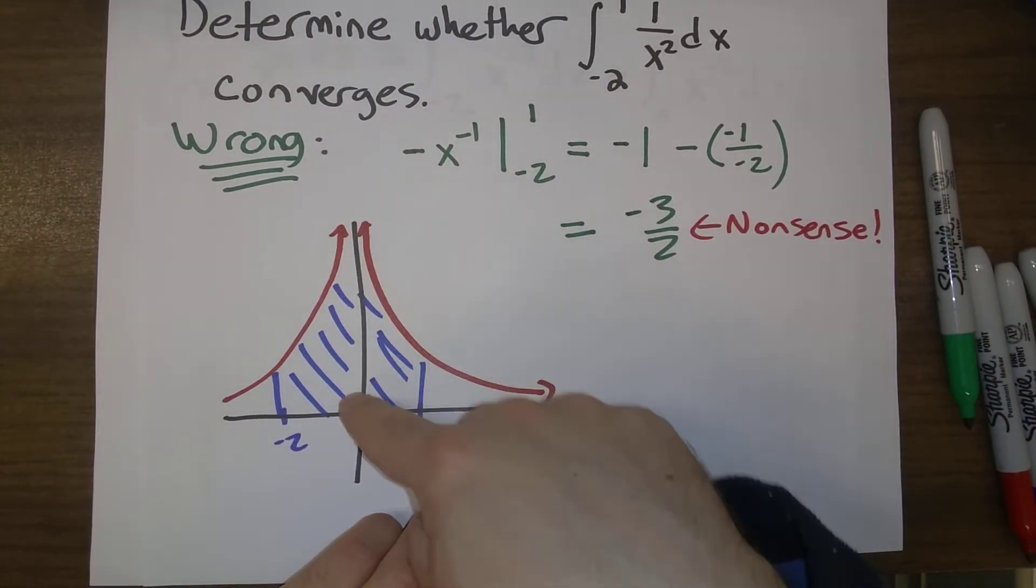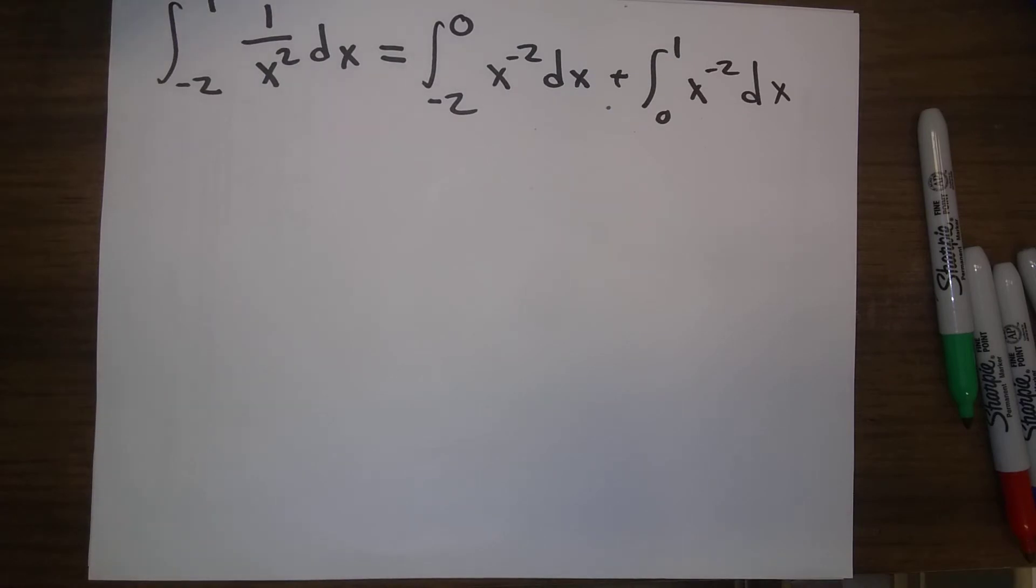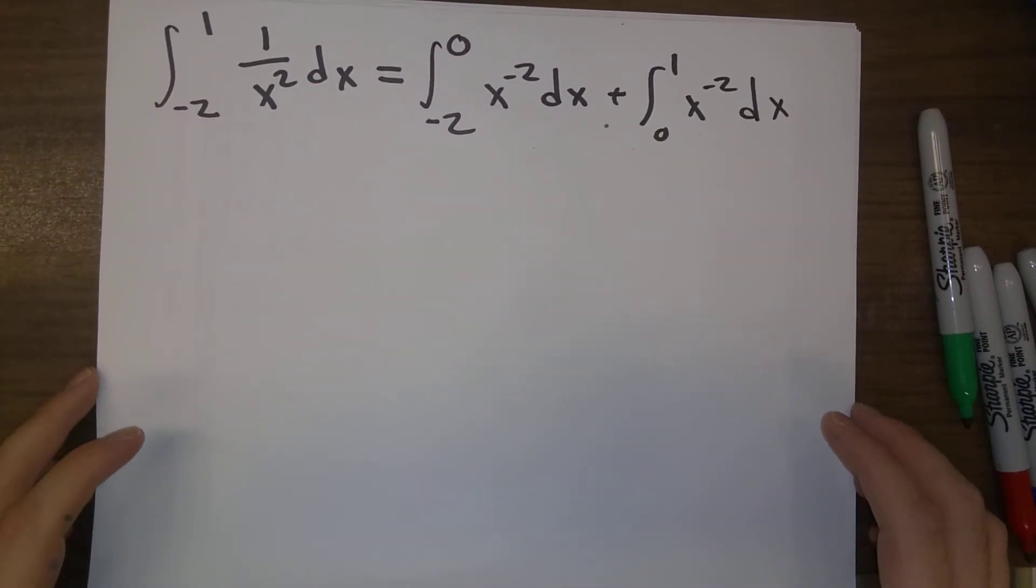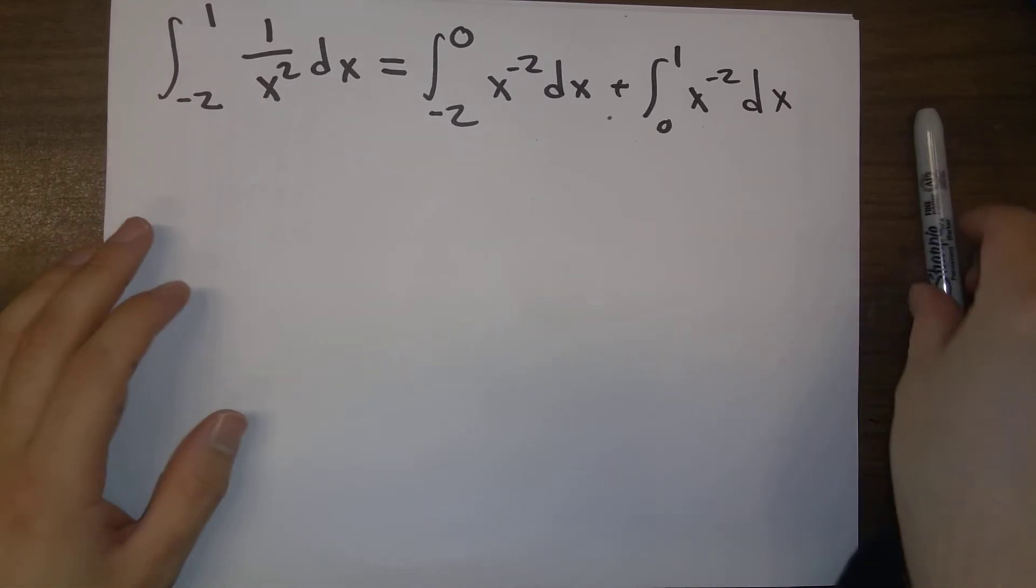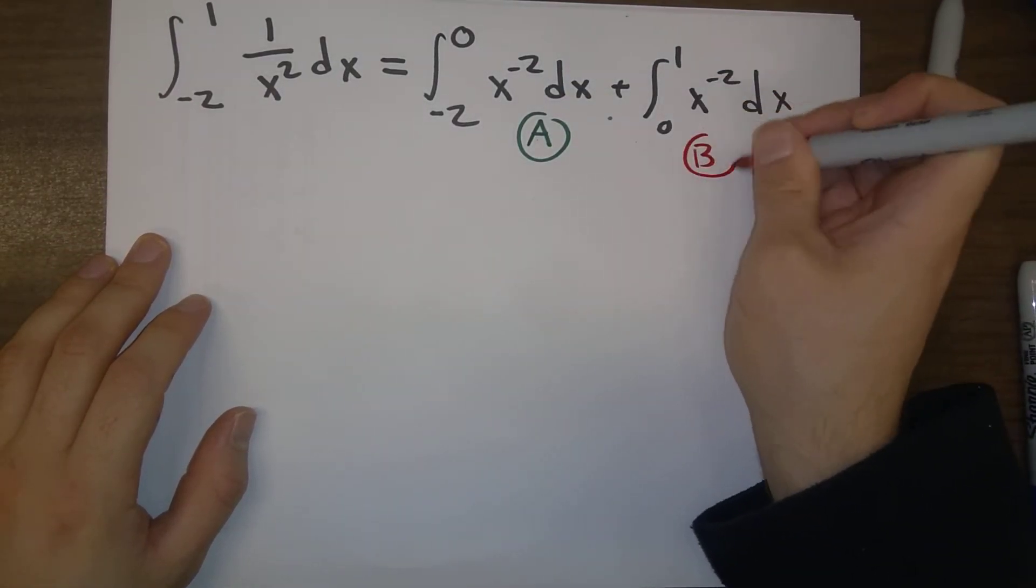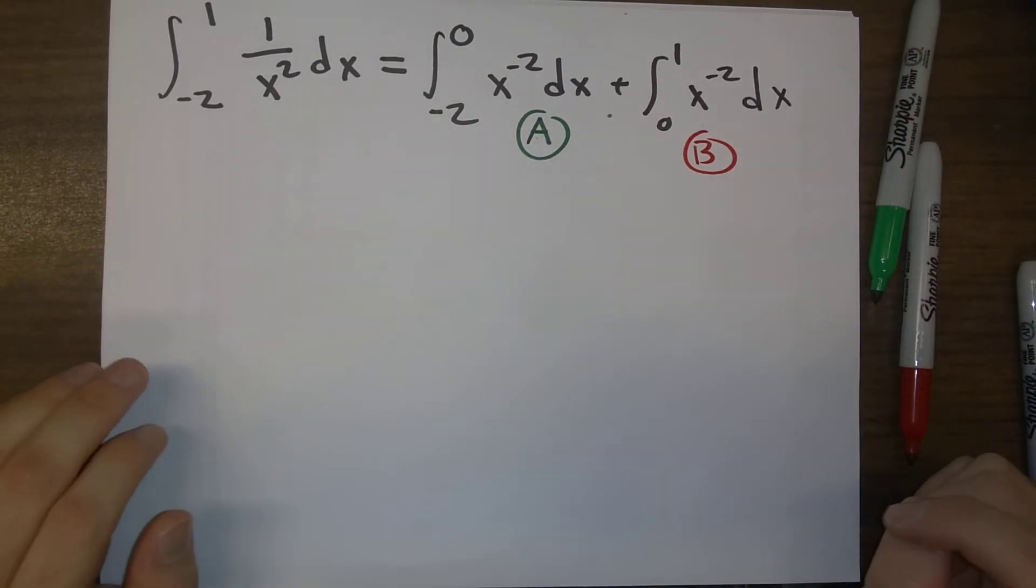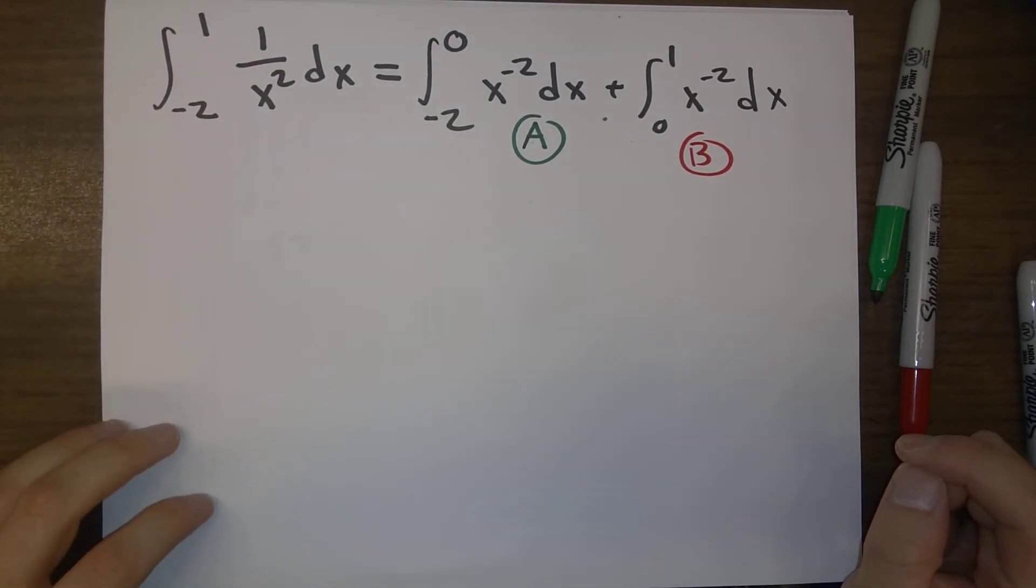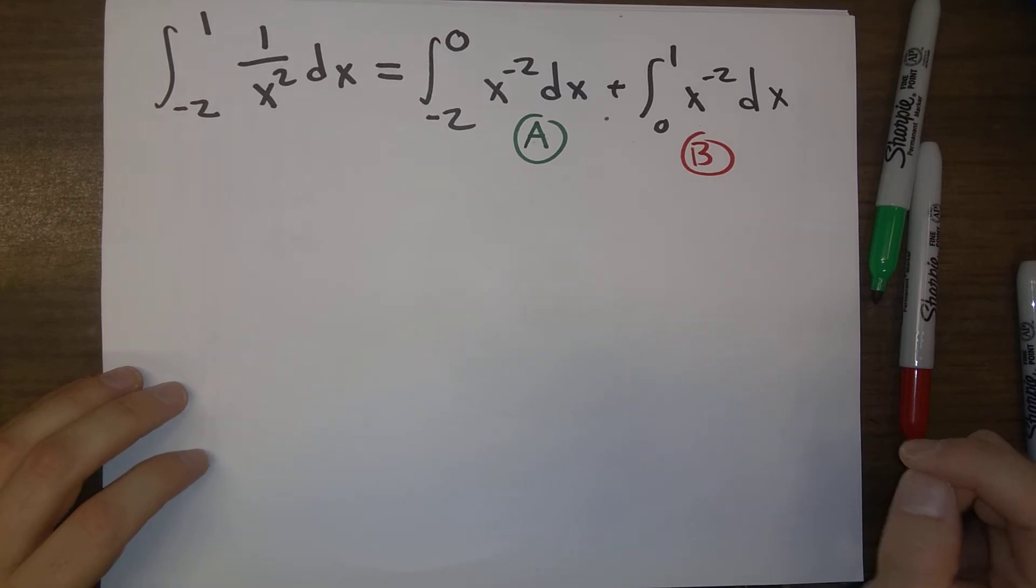We're breaking our integral, breaking the bounds right here. And so now we're going to look at each of these two improper integrals separately. So we'll call this A. We'll call this B. If either of these integrals diverges, the overall integral diverges, if they both converge and we get finite answers for them, then we just simply add together our two finite answers to get the overall answer to our original problem.